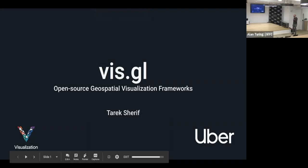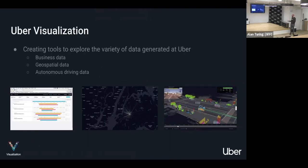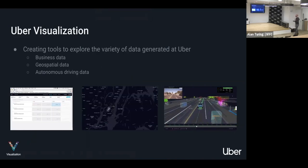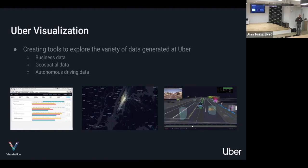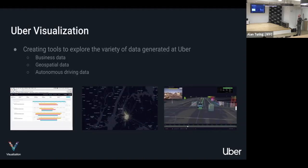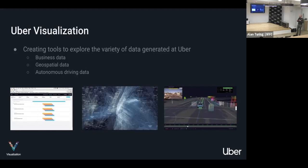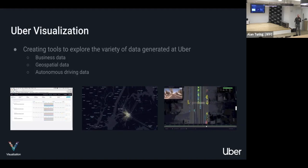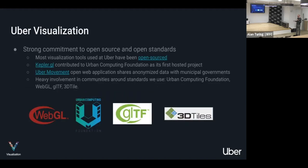Hi everyone, I'm Tarek, I work on the visualization team here at Uber. Not everybody knows that we have a visualization team here — the basic idea is that we produce a ton of data of all different sorts: there's business data, geospatial data, and now with some of the R&D stuff we're doing, autonomous driving data. The visualization team's mandate is to produce tools that allow teams at Uber to explore that data, get meaning out of it, and make sense of it so we can make better decisions.